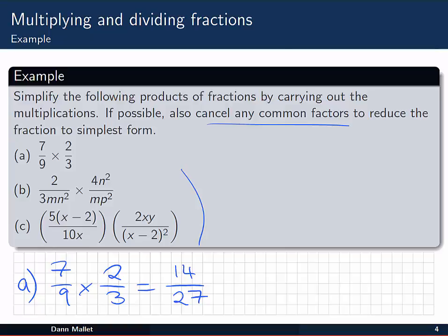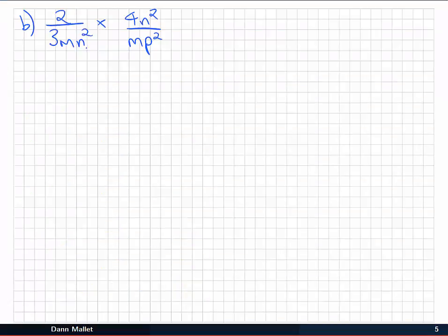Okay. So in part b, we've started to introduce algebraic quantities, variables or letters. So we have (2/3mn²) by (4n²/mp²).